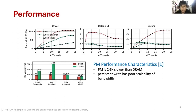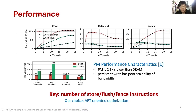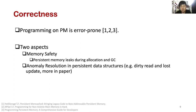Secondly, performance always plays an important role in persistent indexes' design. Previous work has reported the performance of Intel Optane DC PMM. Many works have proposed optimizations to reduce the number of store and fence instructions. In this work, we offer several ART-oriented optimizations. Finally, we discuss the correctness of persistent indexes, focusing on two aspects: memory safety and anomaly resolution.